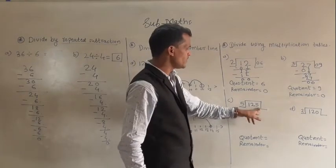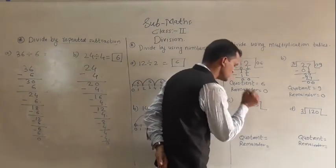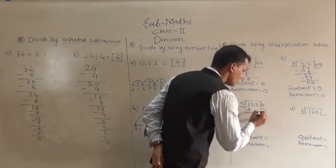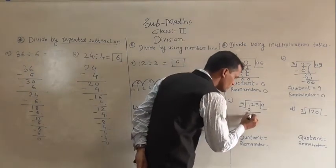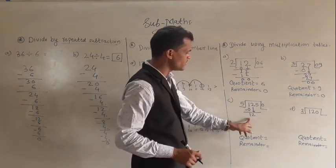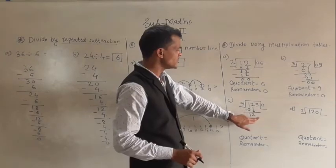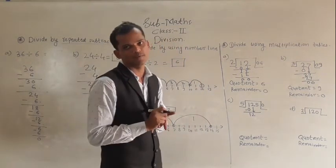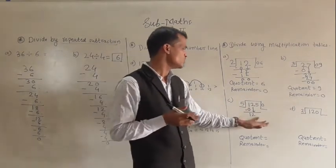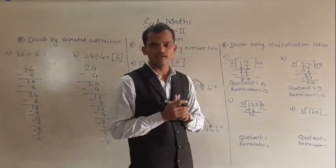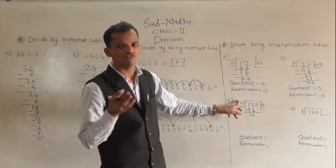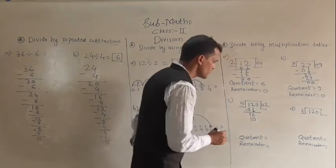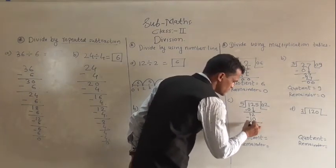Next example: 125 divided by 5. The first digit is 1, which is smaller than 5. Write 0 here and subtract 0 from 1: 1 minus 0 is 1. Take the next digit down to get 12. Now 12 does not come in the table of 5 — 5 ones are 5, 5 twos are 10, 5 threes are 15. So check which number smaller than 12 comes in the table of 5: that is 10. Write 2 here since 5 twos are 10. Then subtract 10 from 12: 2 minus 0 is 2, 1 minus 1 is 0.